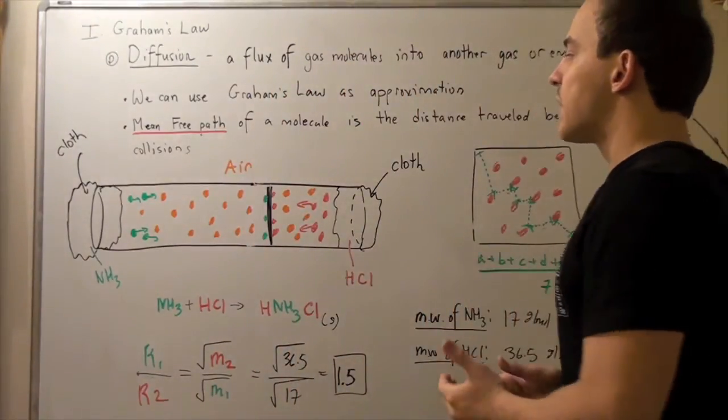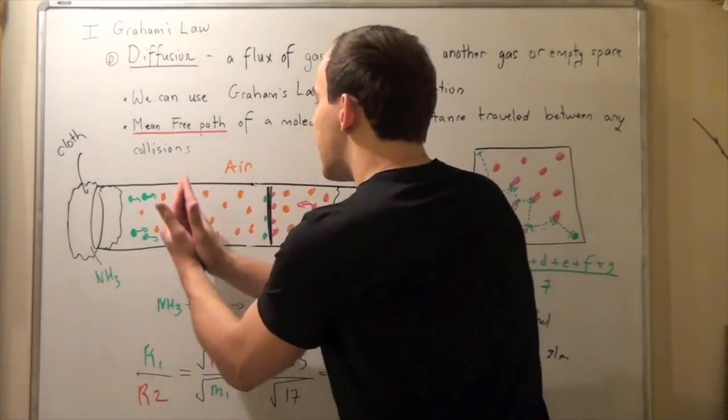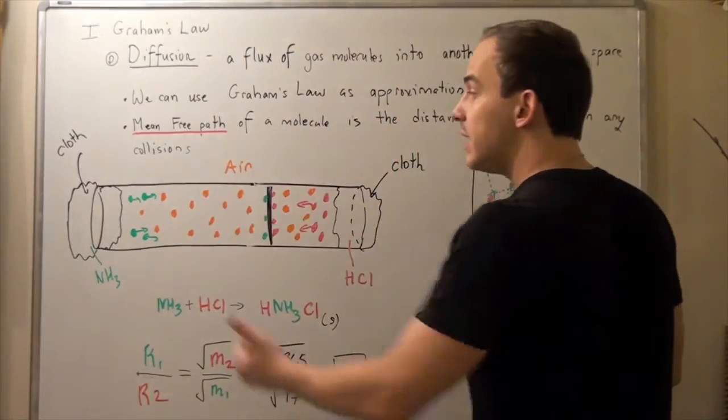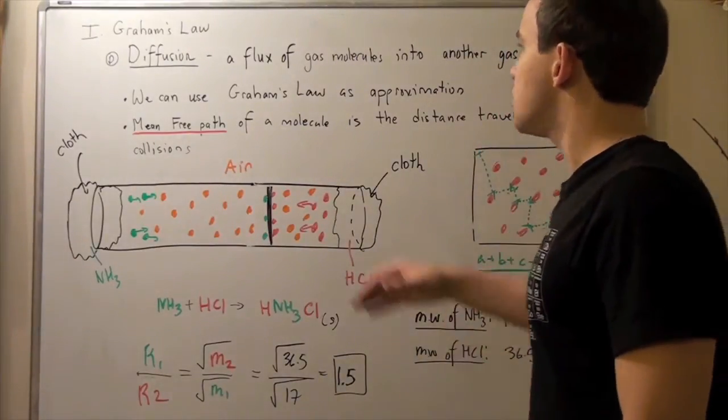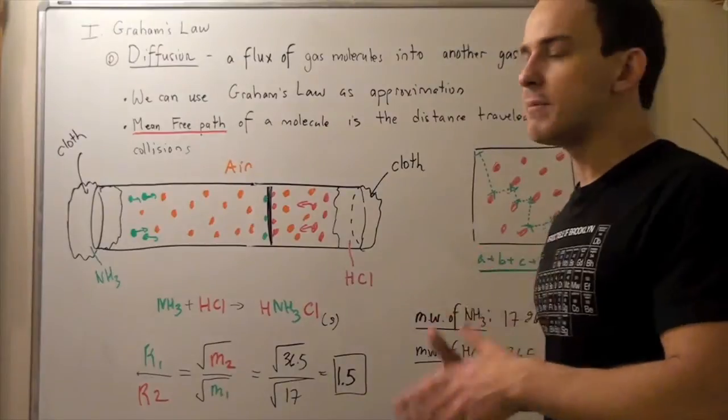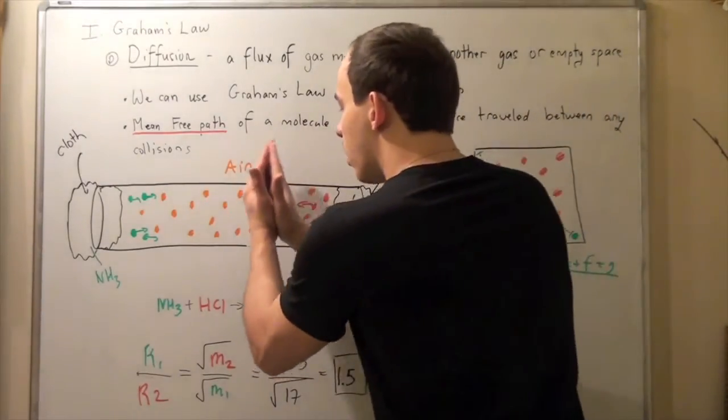And my question is, at which point will the wall lie? Will it be in the middle? Will it be on this side? Or closer to hydrochloric acid? So we can use Graham's Law to approximate the position of this wall of solid.